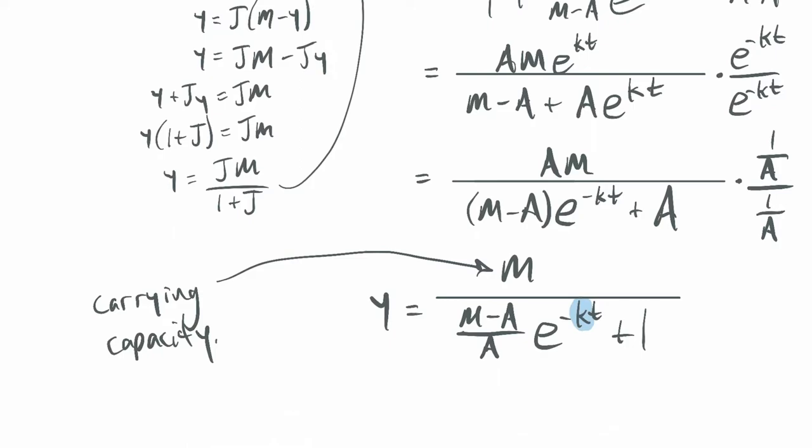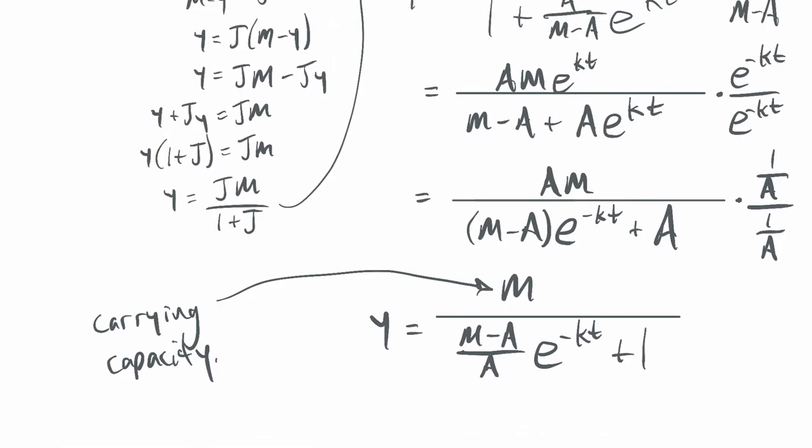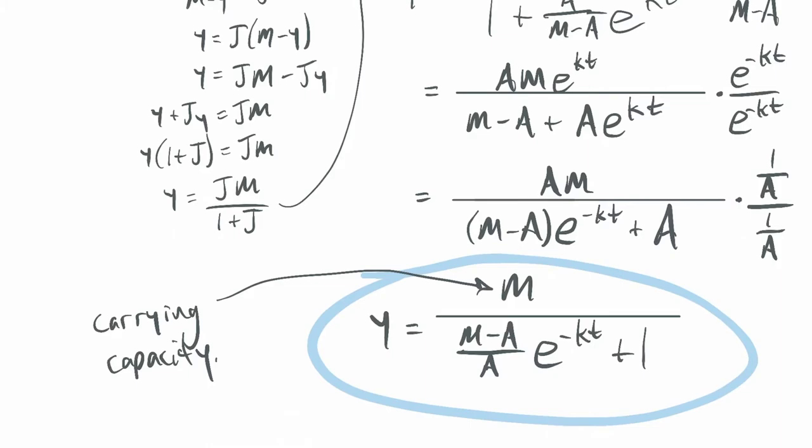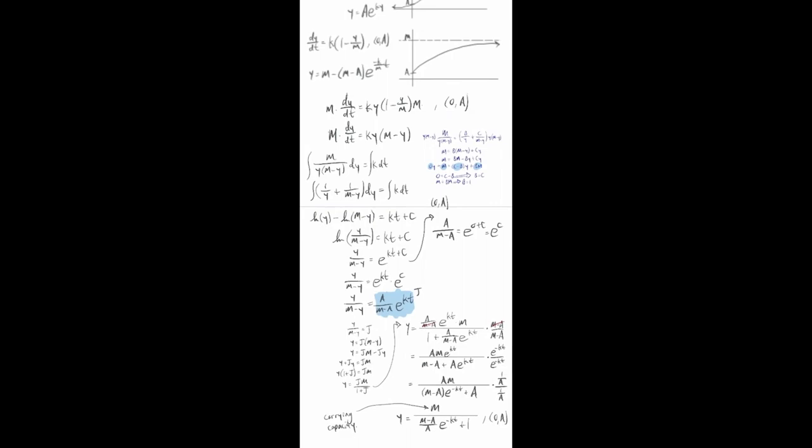K is the growth factor. And then (m minus a) over a, this is basically a factor or parameter that adjusts how long it takes to reach the midway point between your starting amount and your maximum, basically. So this is the solution to the logistic equation. So this is called logistic model with initial value (0, a). So it's fairly complicated. And we needed partial fractions. So we need partial fractions to do this. So it's fairly complicated.